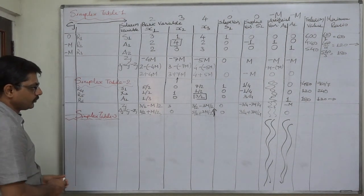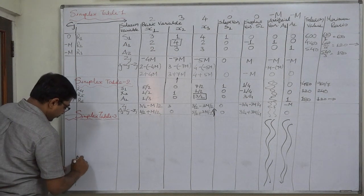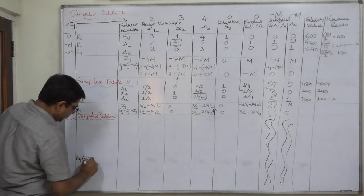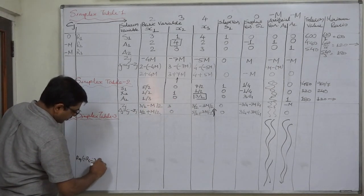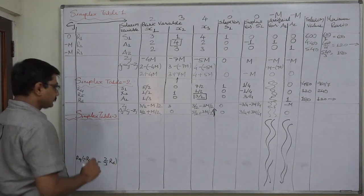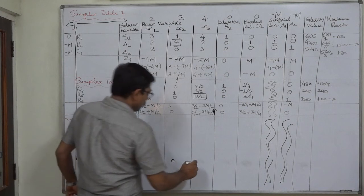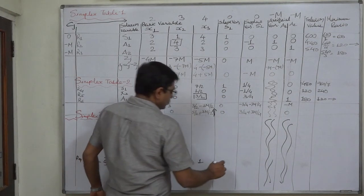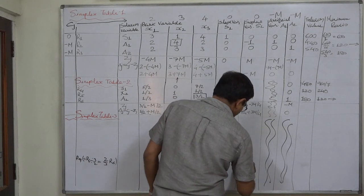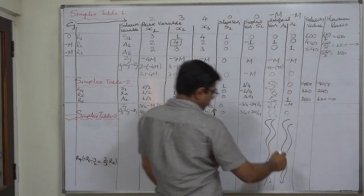We have to first replace the third row. In Simplex Table 3, we write the third row r6. The formula will be r6 divided by the key element 3/2 — anything divided by 3/2 is multiplied by 2/3. So: 1/3 × 2/3 = 2/9; 0 × anything = 0; 3/2 × 2/3 = 1; 0; 3/4 × 2/3 = 1/2; and 180 × 2/3 = 120.